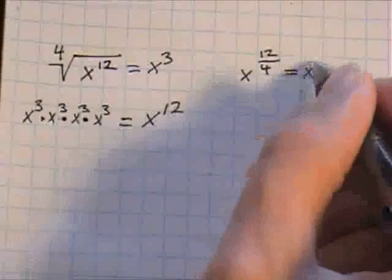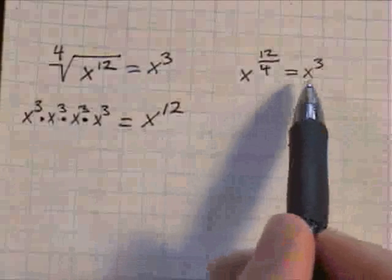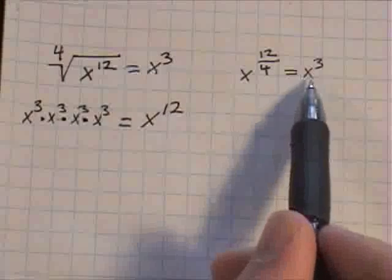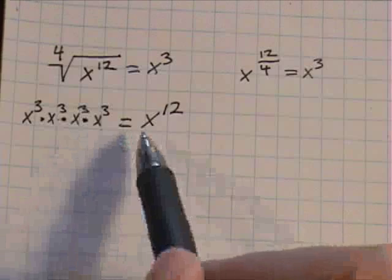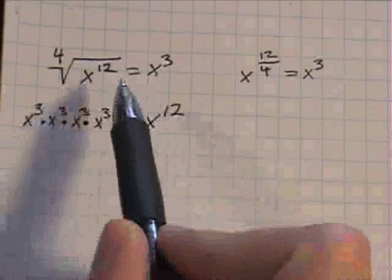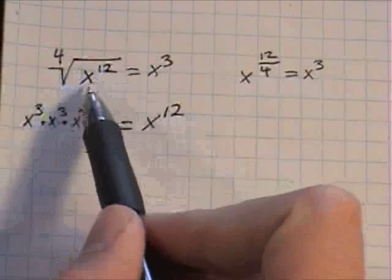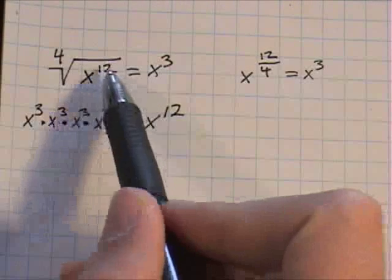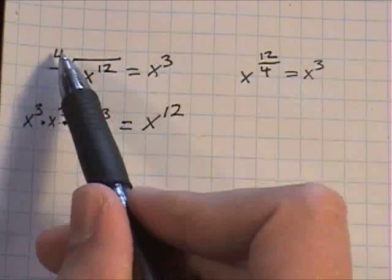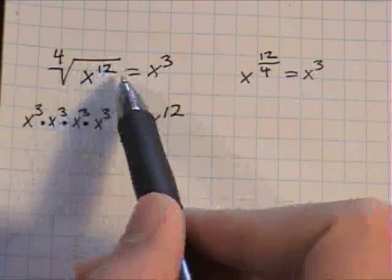And twelve divided by four is three. So this just becomes x to the third, which is the same solution we had over here when we did it the more difficult way. So that's the rule, is that if you have a certain variable raised to a power, you can take that power and you can divide it by the index, and then you'll have your new power.